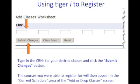So once your time to register comes, type in all your CRNs for your desired schedule into the boxes before clicking Submit. All of the classes that you are able to get into will then pop up under the current schedule portion of the page.